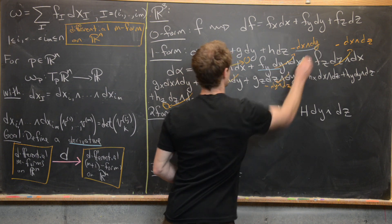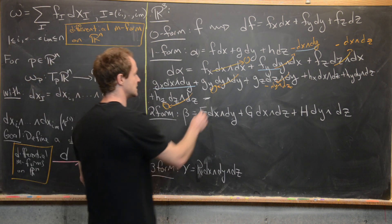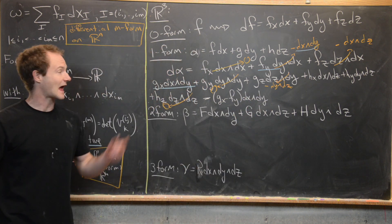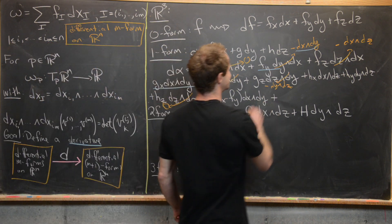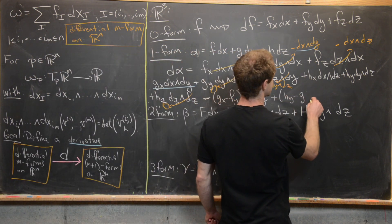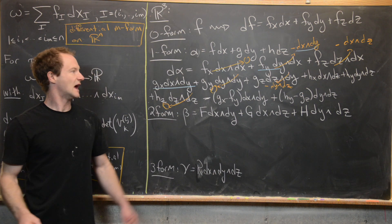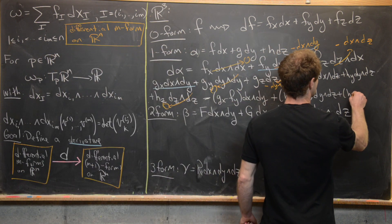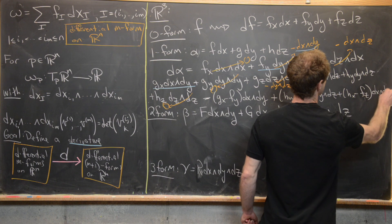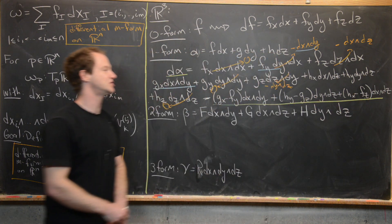Combining like terms, d(alpha) = (g_x − f_y) dx∧dy + (h_y − g_z) dy∧dz + (h_x − f_z) dx∧dz. This is the derivative of the 1-form, and it has turned into a 2-form, as expected.